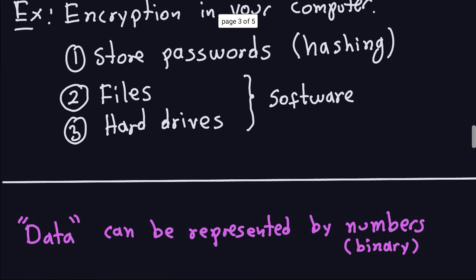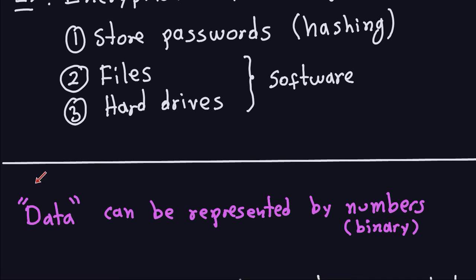So all this comes down to the following: we want to encrypt data — not only text, but maybe files, pictures, Word documents, music, movies, or even a whole hard drive. The modern cryptography will encrypt data instead of encrypting text. Data is represented by numbers, which in computers is usually binary — zeros and ones.